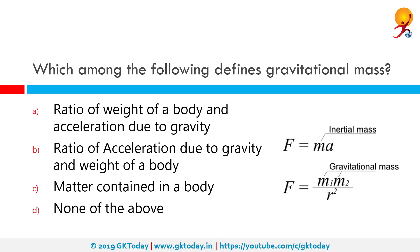Which among the following defines gravitational mass? Gravitational mass is determined by the strength of the gravitational force experienced by the body when in gravitational field G. So the correct answer is the ratio of weight of a body and acceleration due to gravity.